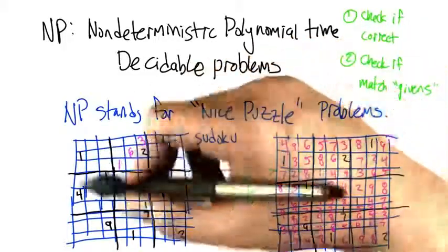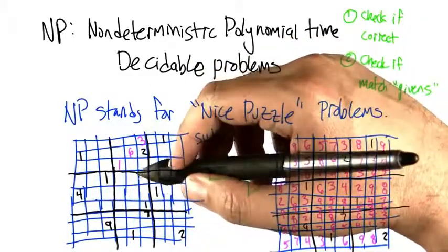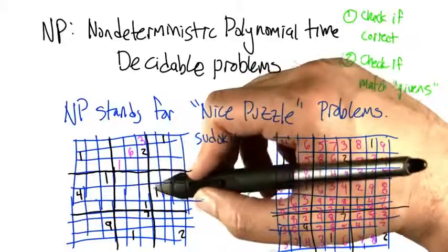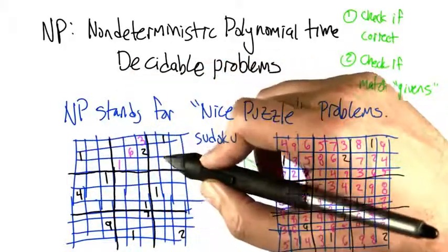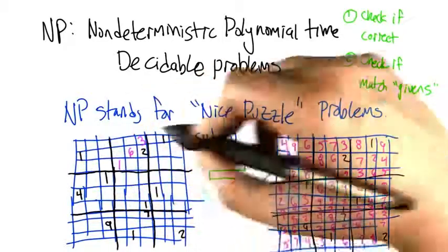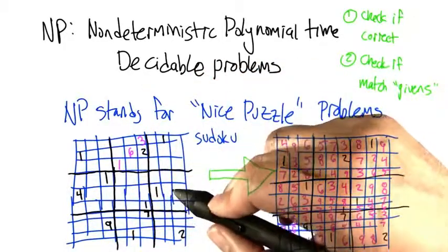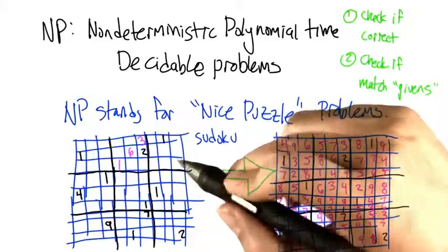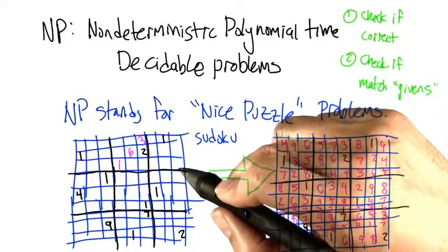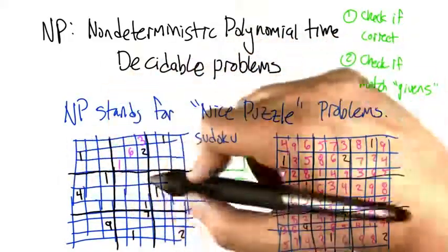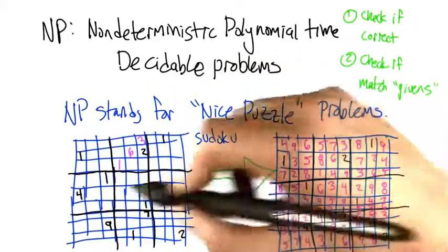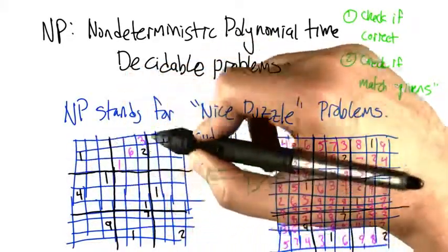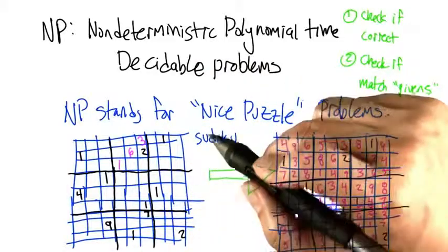If you don't know, this is a very popular newspaper puzzle. You're given a bunch of numbers in a 9x9 grid and you have to fill in all the grid cells. The solution that you fill in has to have the property that every row and every column has the numbers 1 through 9, and each of these dark blocks also has the numbers 1 through 9.